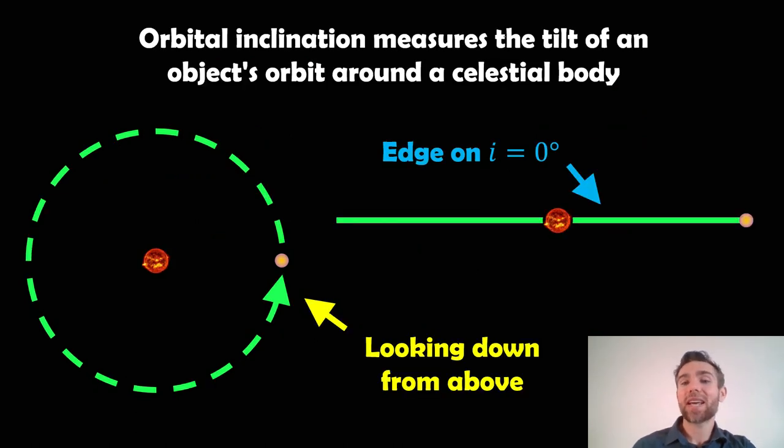So the inclination of an orbit is the tilt of an object with respect to some plane of reference. On the left-hand side we're looking down from above at a circular orbit, and on the right-hand side we're looking edge on at the orbit, so we're looking at the orbital plane.